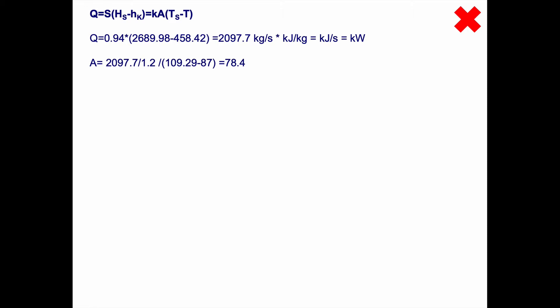And the area then, we take 2097 and divide it by the apparent heat transfer coefficient and the temperature difference. Note that this temperature here should be the overheated temperature, because that's the temperature of the liquid coming out. If you put in the temperature without the boiling point elevation, I will deduct points on an exam. So the area is 78.4 square meters.